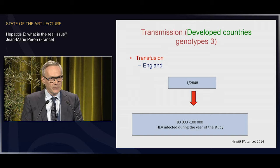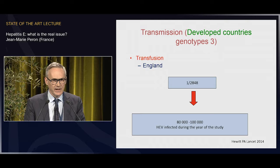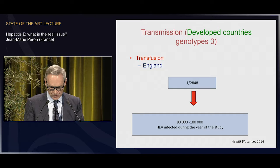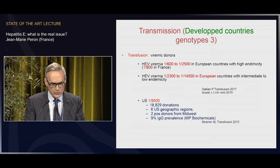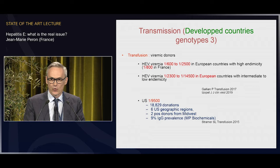If one in 2,848 donors is positive for HEV, that means 80,000 to 100,000 people in England are infected with HEV each year — that's huge. In Europe, HEV viremia ranges from one in 600 to one in 2,500 donors in high-endemicity countries. In France it's one in 800 donors — very high. It's one in 2,300 to one in 14,000 in low or intermediate endemicity European countries, and about one in 10,000 in the US.